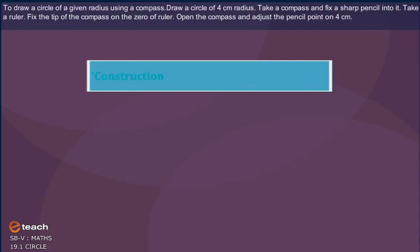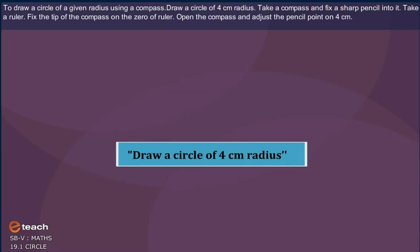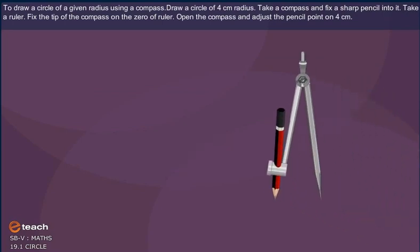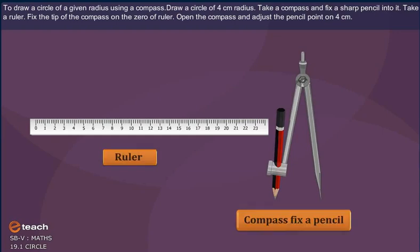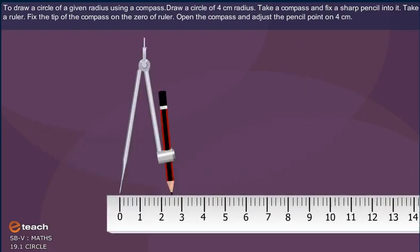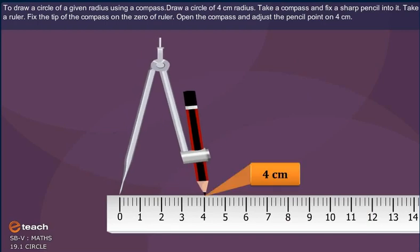To draw a circle of a given radius using a compass, draw a circle of 4 cm radius. Take a compass and fix a sharp pencil into it. Take a ruler. Fix the tip of the compass on the zero of the ruler. Now open the compass and adjust the pencil point on 4 cm.